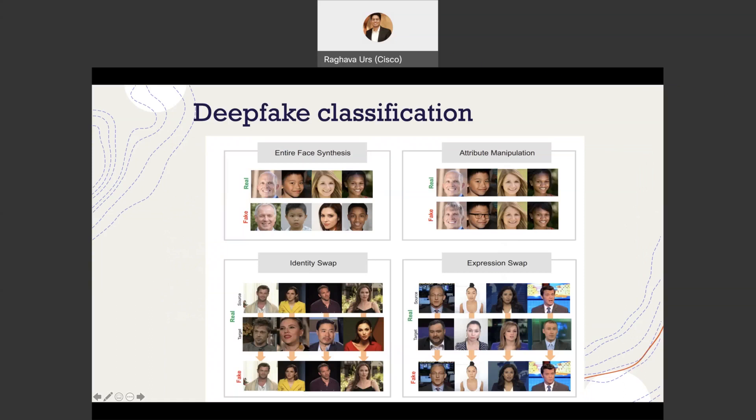Face swap is the predominantly used type of deepfake, wherein there exists two videos, source and destination. The face of a person in the destination video is swapped with the face of the person in the source video.